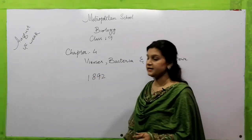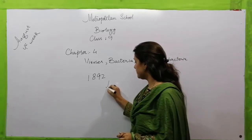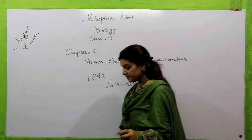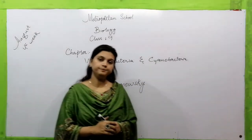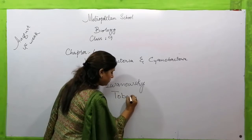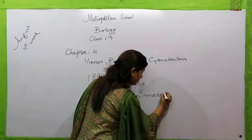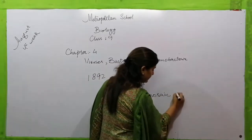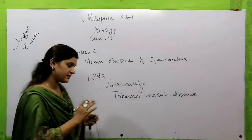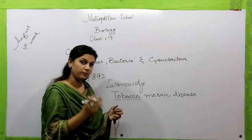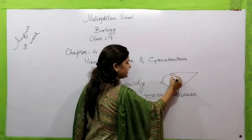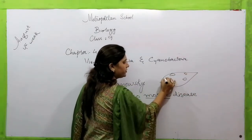In 1892, the Russian scientist Ivanoski discovered a disease named tobacco mosaic disease. The tobacco plant — tambaku ka poda — was affected by a disease called mosaic, where yellow patches appeared on the leaves of the plant, resembling a mosaic pattern.